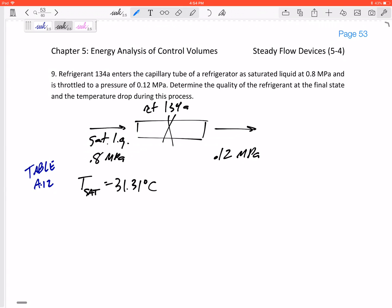Now what other piece of information might we want to find for the inlet conditions? Well, you've got to know for a capillary tube or throttling valve, it is constant enthalpy. The enthalpy does not change. h1 equals h2, the h_inlet equals the h_outlet.